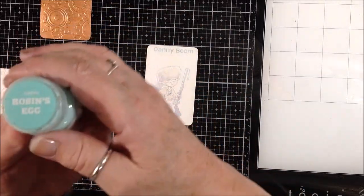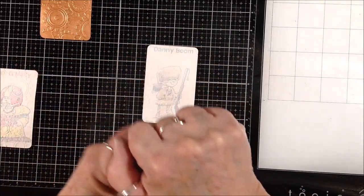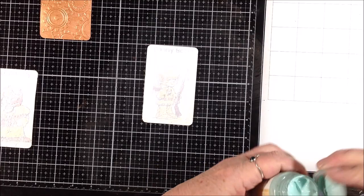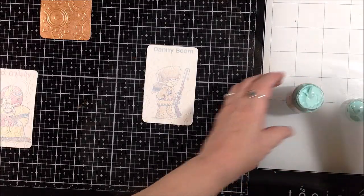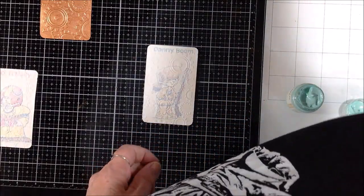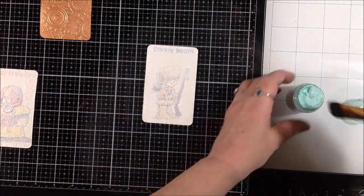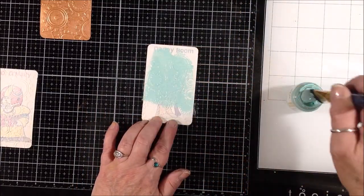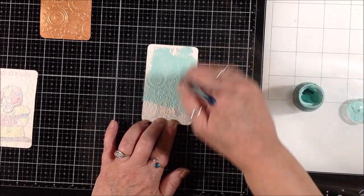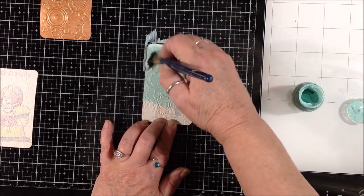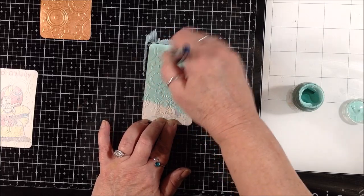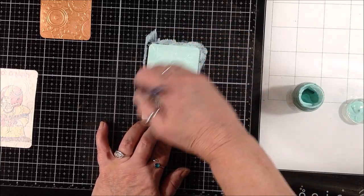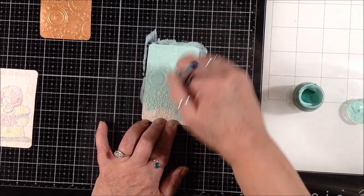For the next one I'm using this Target brand acrylic paint in robin's egg. These are really nice paints, super inexpensive. It's just a craft paint but they come in a lot of really pretty colors and I really like them. So this is robin's egg and I'm just laying down the color on this one too.